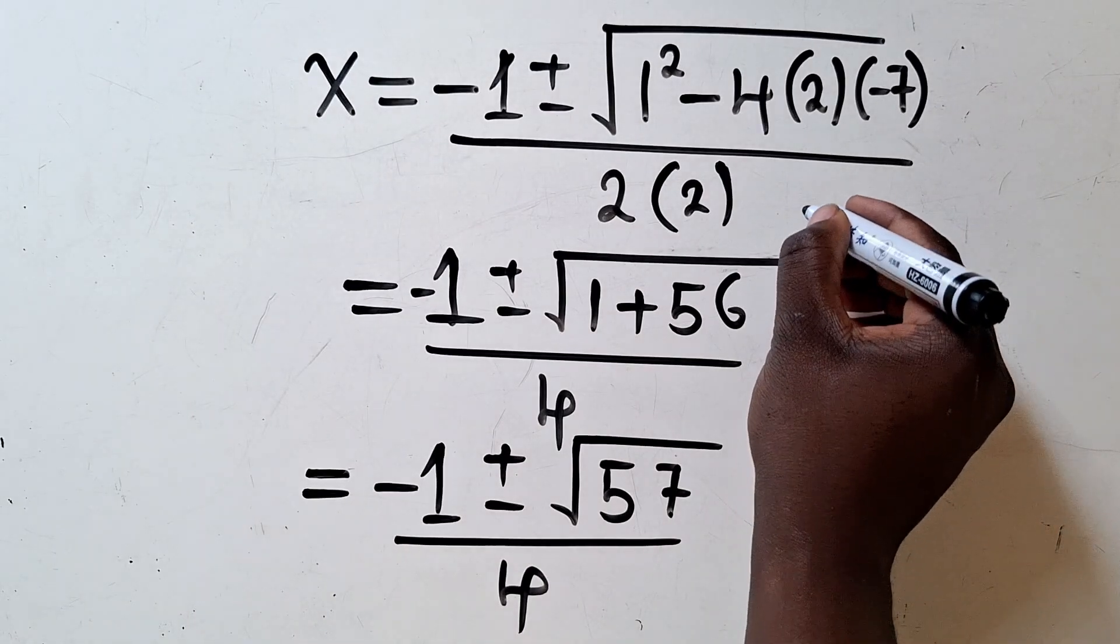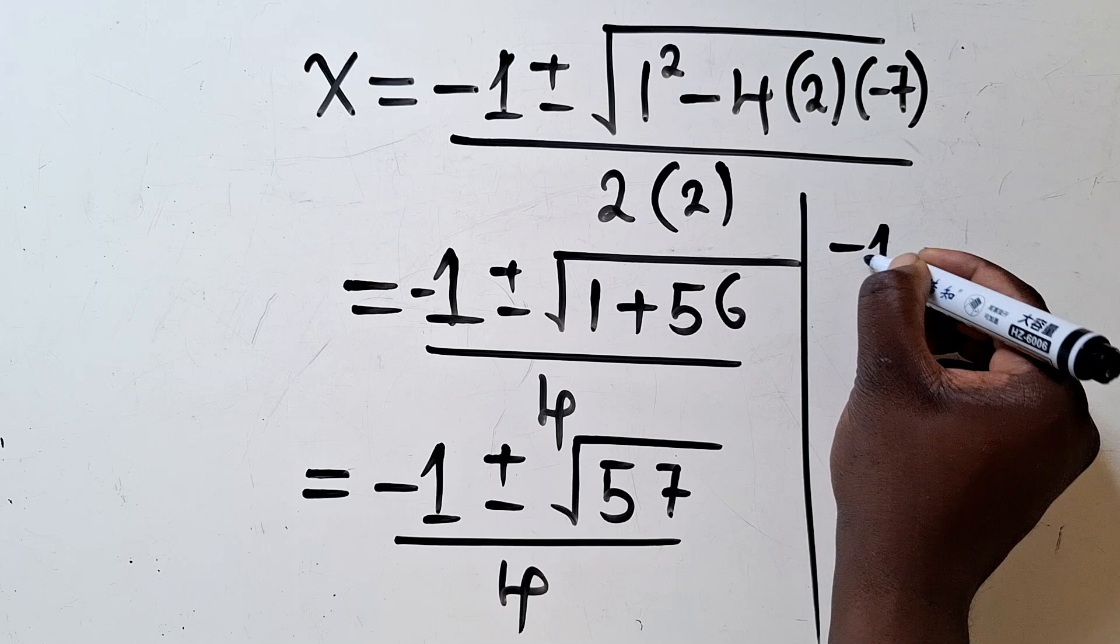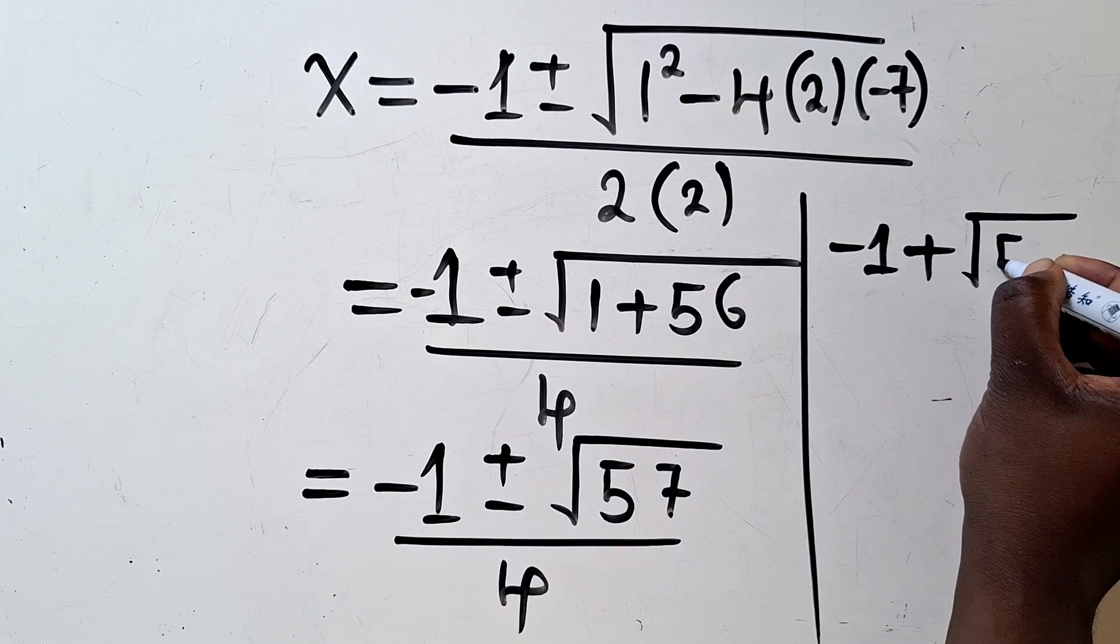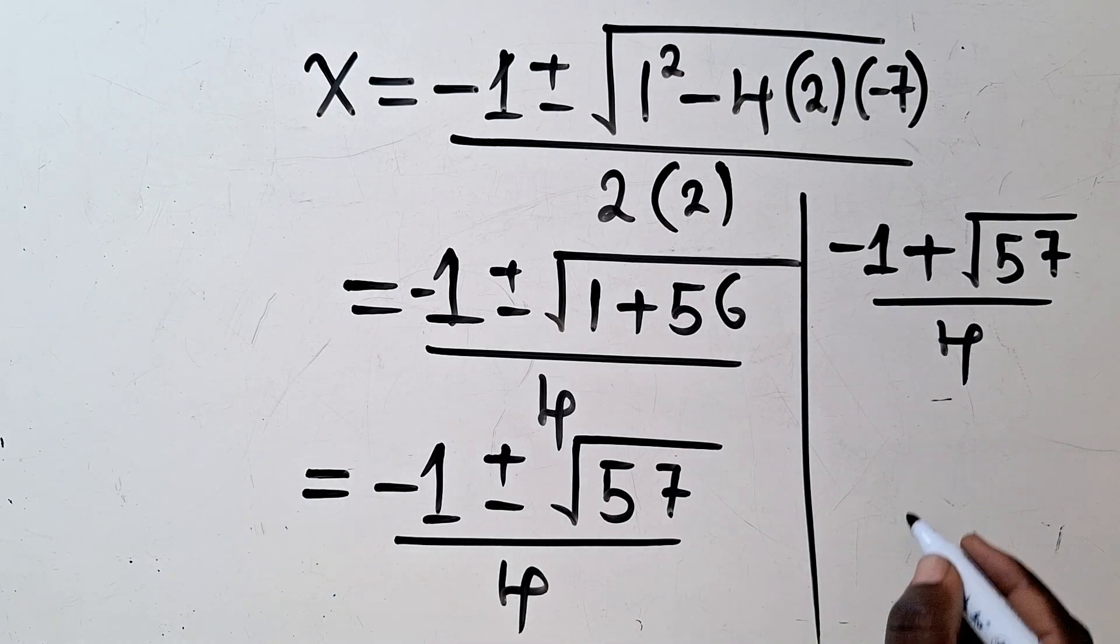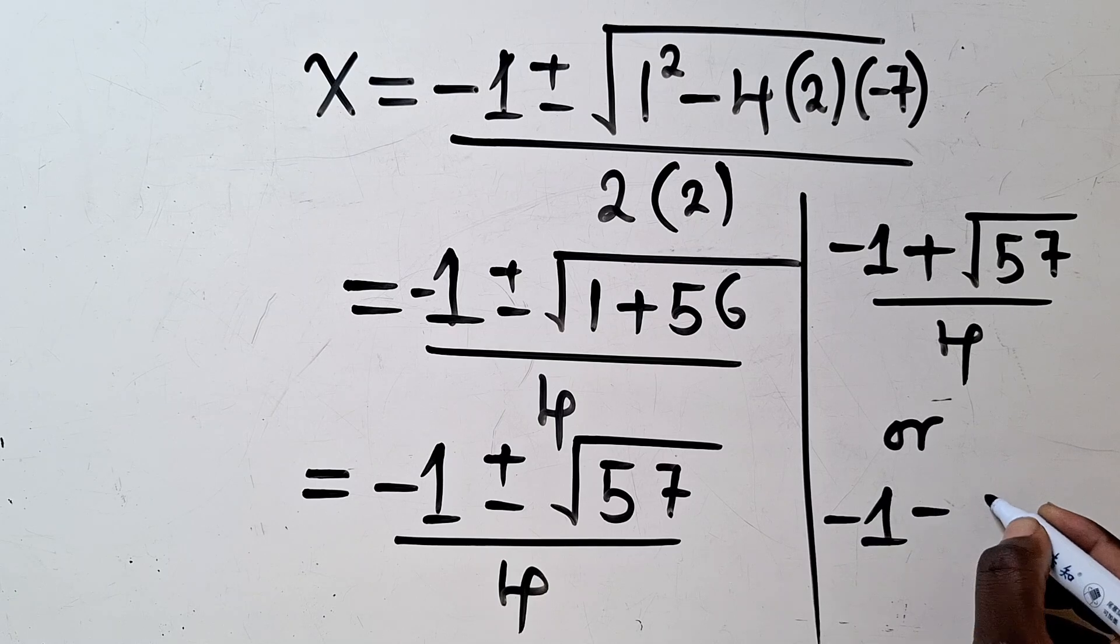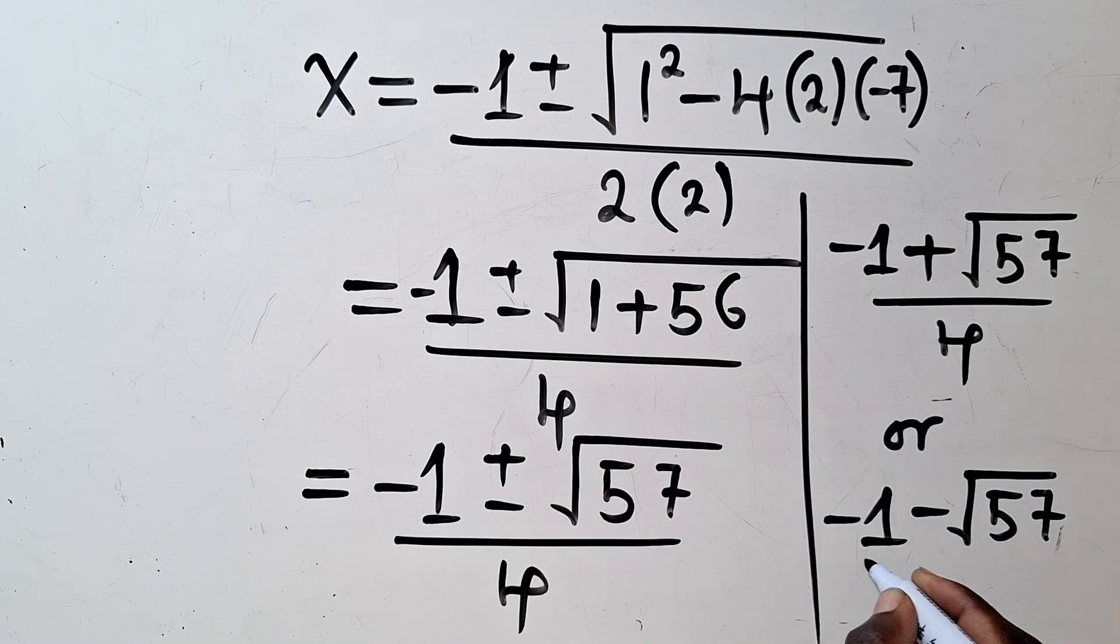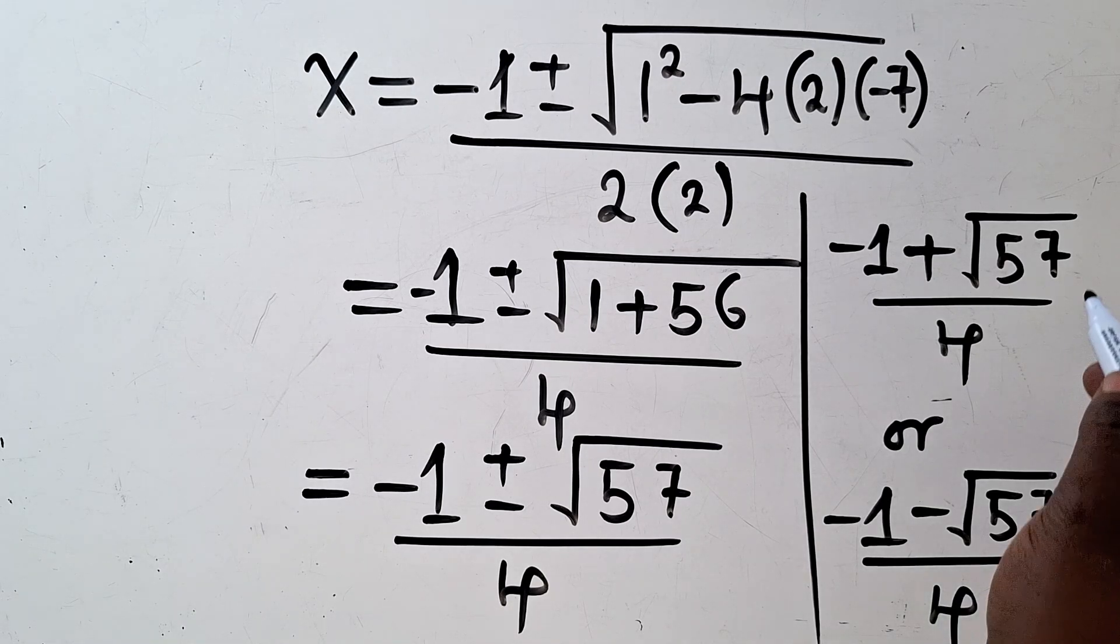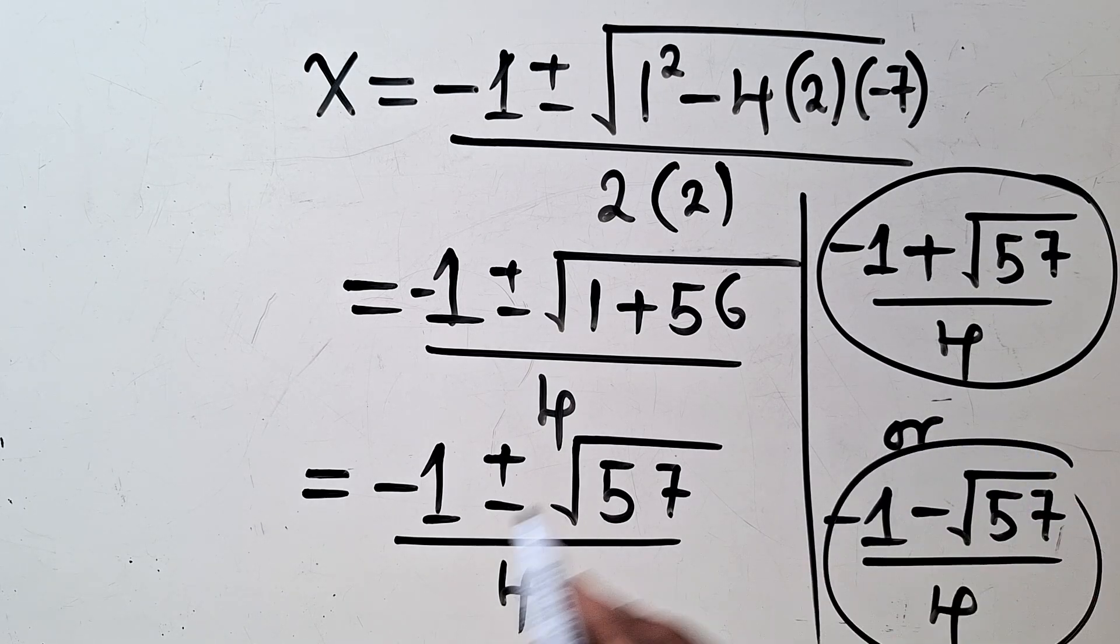x equals negative 1 plus or minus square root over 57 over 4. We can of course separate here. We've got negative 1 plus square root over 57 over 4, or negative 1 minus square root over 57 over 4. We've got two equations to solve, equation 1 and 2 right here.